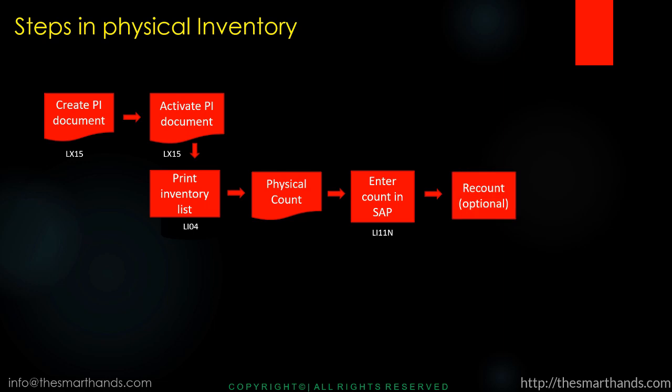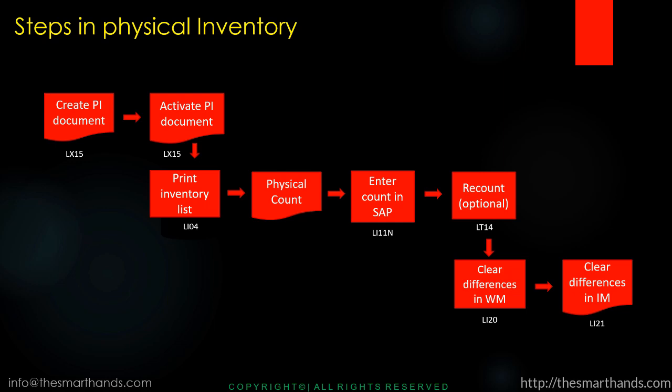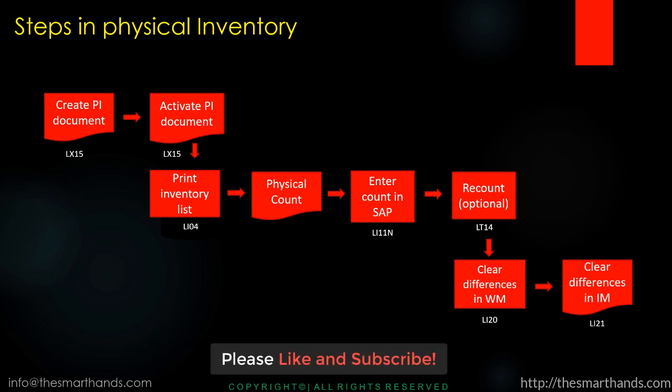The warehouse person physically counts the stock, and then that count is entered into the SAP system using transaction LI11N. There is also an optional recount step — if there is a big difference between the SAP stock and what was counted, the system can give a warning message (for example, more than 10 or 20 percent difference). If there's doubt, we can ask the warehouse person to recount using transaction LT14. Finally, once we're satisfied, we clear the differences in WM using LI20, and the last step is to clear the differences in Inventory Management in MM using transaction LI21.